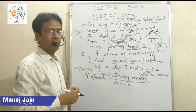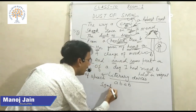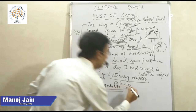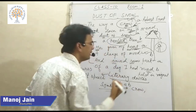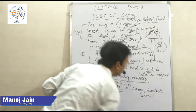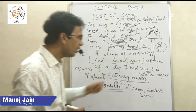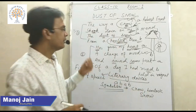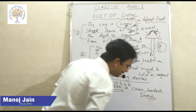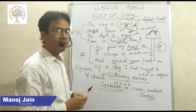Another figure of speech is symbolism. While reading the poem, you may have noted three important words: crow, hemlock tree, and snow. Crow is a symbol of an inauspicious thing. Hemlock tree is a symbol of something dangerous or connected with death. And snow is a symbol of peace and joy. These are examples of symbolism.